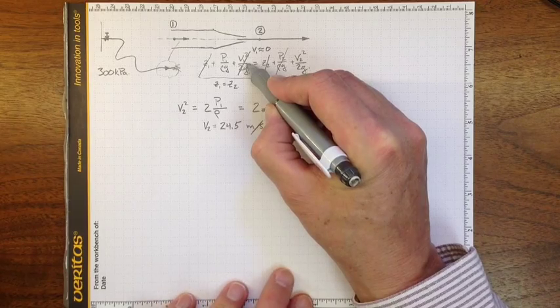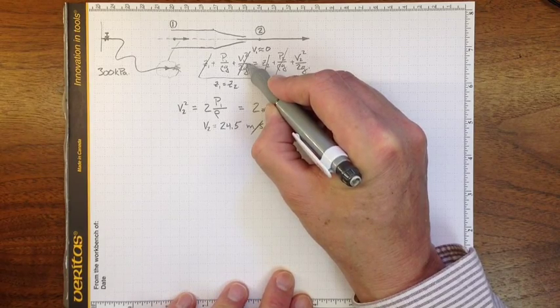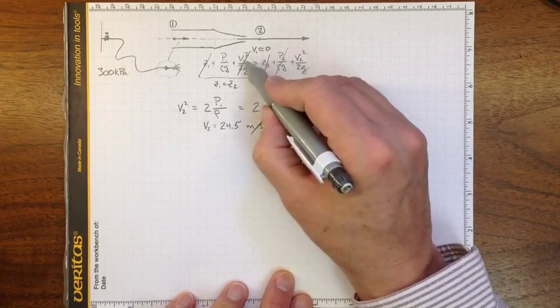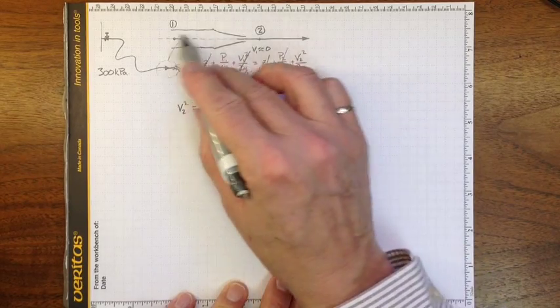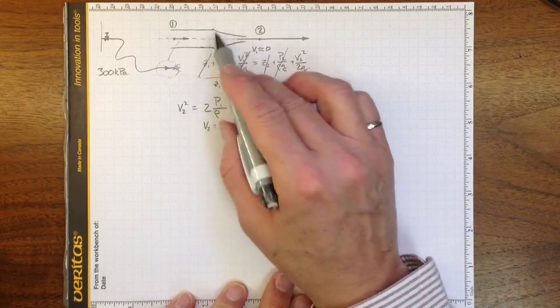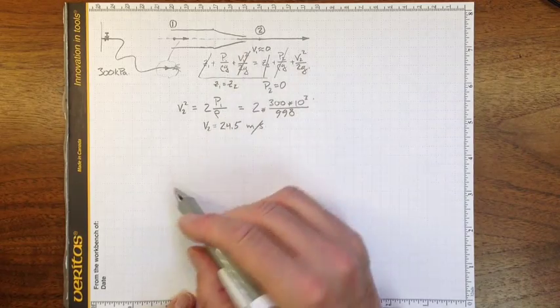So our error is less than half of 1% in our assumption that V1 is close to zero, even if the geometry is just as it's shown. So a very good approximation.